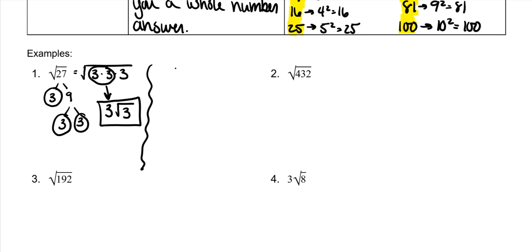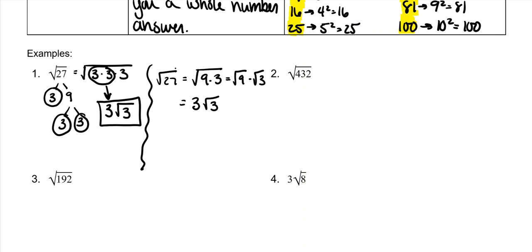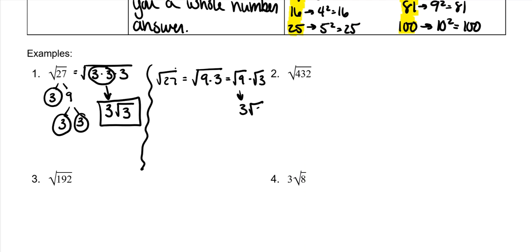Now if you are good with those perfect squares, you might see that the square root of 27 is the same thing as the square root of 9 times 3, which is the same thing as saying the square root of 9 times the square root of 3. And the square root of 9 is 3, so this would be your answer: 3 times the square root of 3.